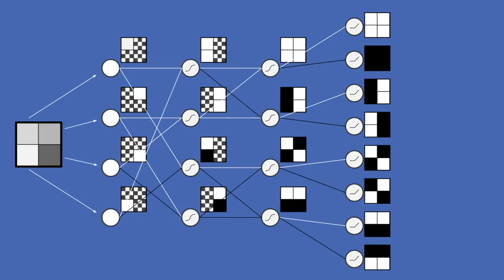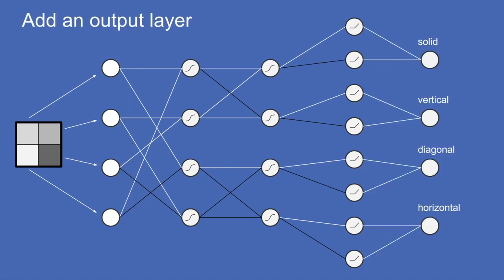Because some weights are positive and some are negative connecting to those rectified linear units, we get receptive fields and their opposites. Finally, when we've created as many layers with as many neurons as we want, we create an output layer. Here we have four outputs: is the image solid, vertical, diagonal, or horizontal?